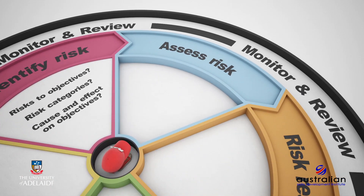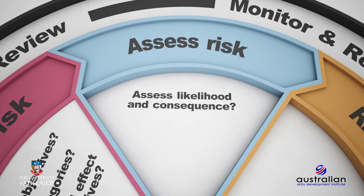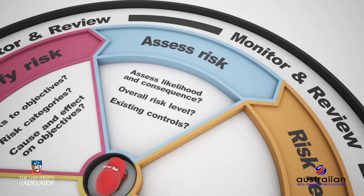Step three of the process requires us to assess the risks that we have identified in stage two. For each and every risk identified, we now have two further questions to consider. The first question is: what is the likelihood of this risk actually occurring? The next question moves to thinking about the possible consequence to your project objectives should the risk occur. A combination of both the likelihood and consequence discussion enables an initial risk assessment to be performed. A number of tools have been developed for this type of qualitative risk assessment, often referred to as the risk assessment matrix, which we will illustrate further in the coming sections of the course. Key questions include: how will you assess likelihood and consequence of each risk? How will you determine the overall risk level? And are there any existing controls in place?